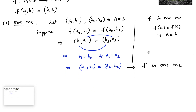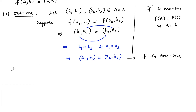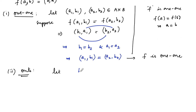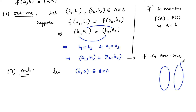Now let us check for onto. Let (b, a) belong to B cross A — we consider an element in the set B cross A. For (b, a) belonging to B cross A, we can say that (a, b) belongs to A cross B.